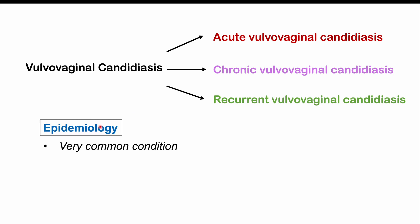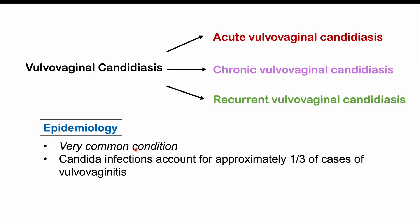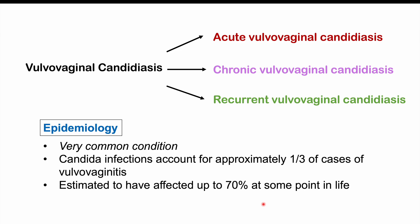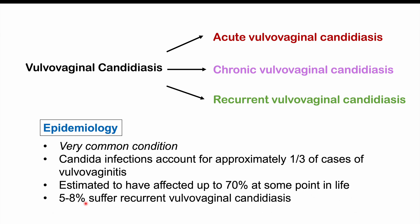Vulvovaginal candidiasis is a very common condition. Candida infections account for approximately one-third of cases of vulvovaginitis. It is estimated that up to 70% of females will have vulvovaginal candidiasis at some point in their life, and 5–8% will suffer from recurrent vulvovaginal candidiasis.